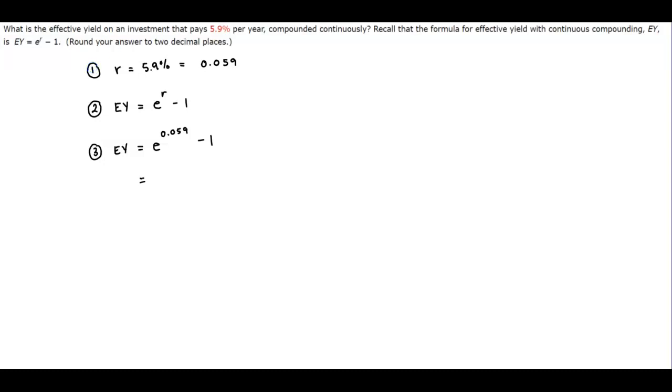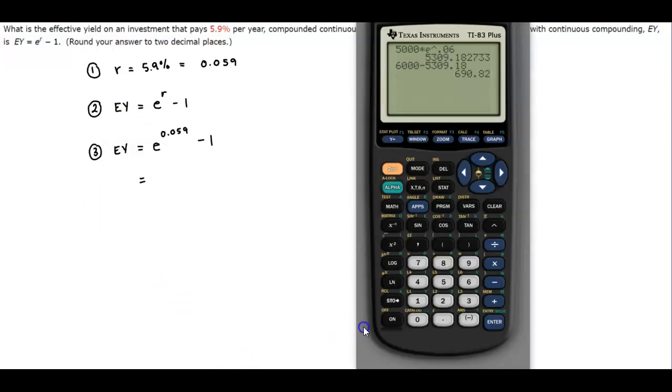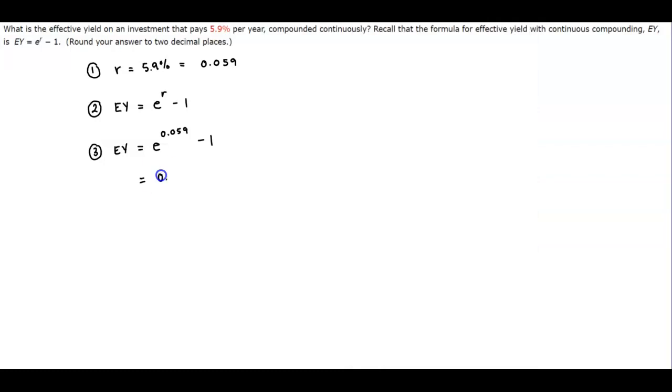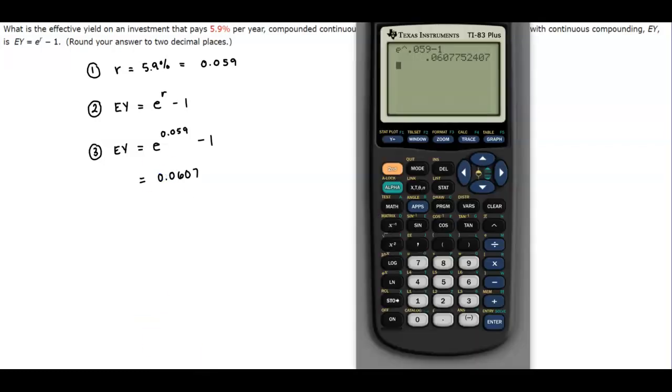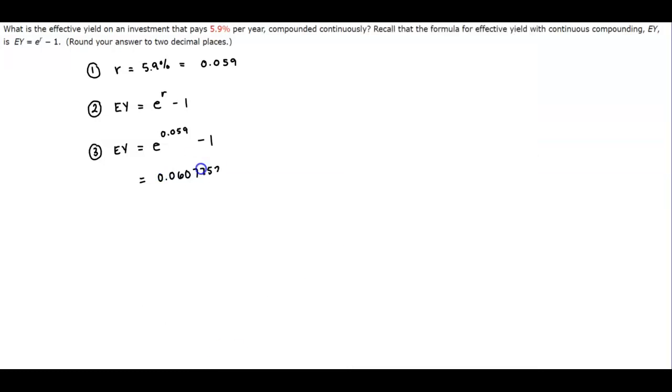Well let's go ahead and find that on the calculator here. So if we take e and raise it to the power of 0.059 and then we're going to subtract 1, and that gives us 0.0607752407.